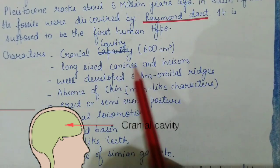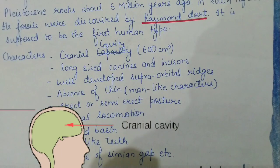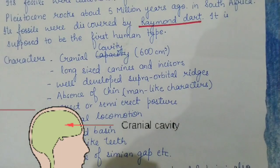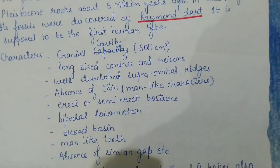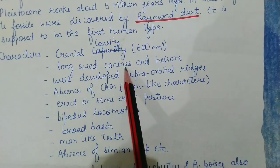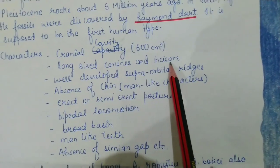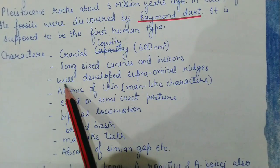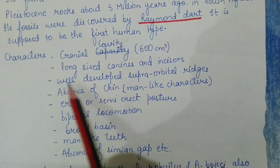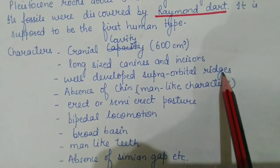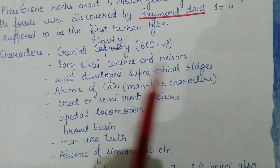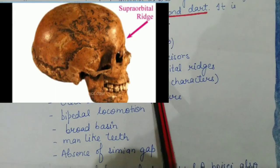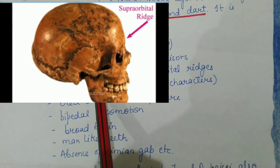They had large-sized canines and incisors. In present human beings, canines and incisors are very short, used for chewing soft food. But in this earlier period they had long canines and incisors because they ate in a more carnivorous mode with less ripened food. The third character was well-developed supra orbital ridges, which are the frontal portion of the skull. You can see these on the picture on the screen.